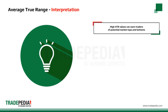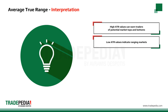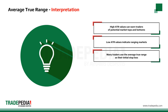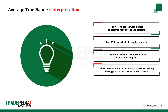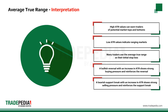High average true range values can warn traders of potential market tops and bottoms. Low average true range values can also indicate ranging markets. Many traders use the average true range as their initial stop loss. A bullish reversal with an increase in ATR shows strong buying pressure and reinforces the reversal. A bearish support break with an increase in ATR shows strong selling pressure and reinforces the support break.